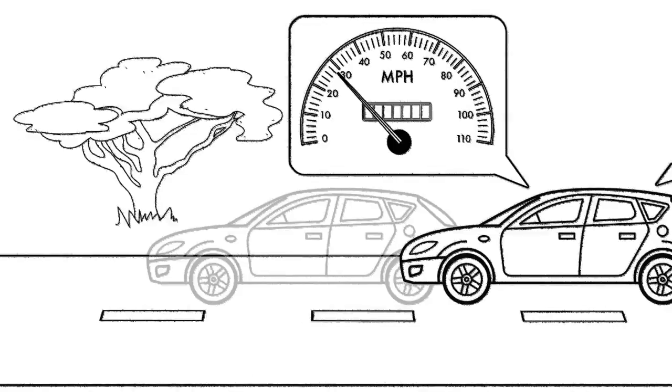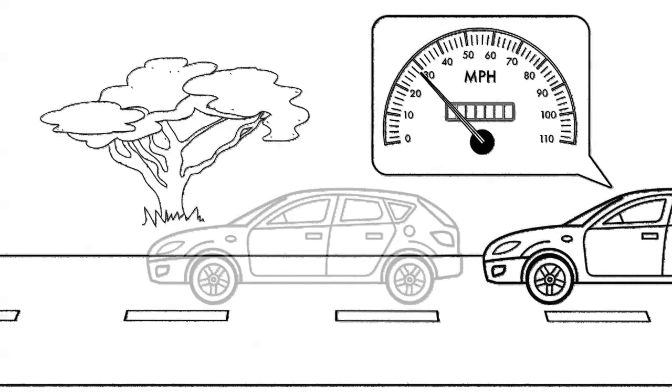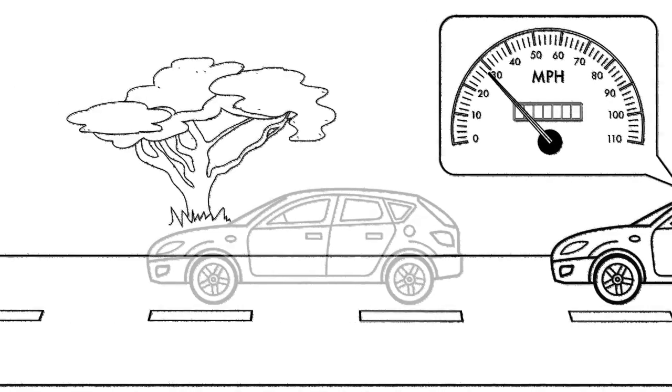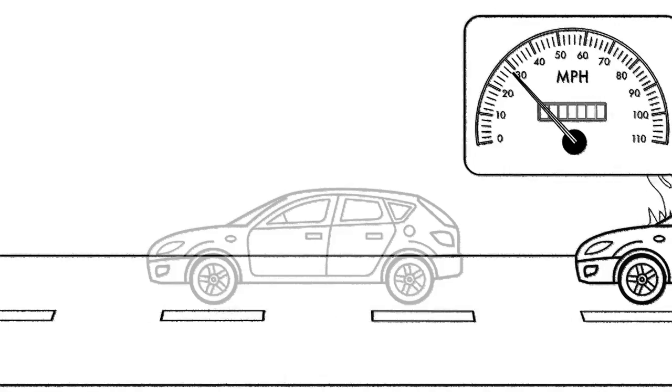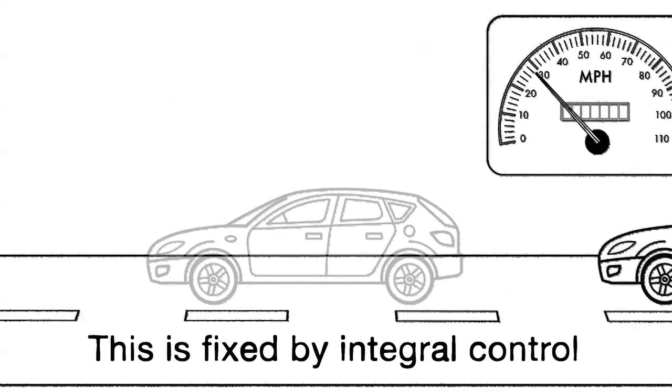What we need is something that comes more into play the longer the error exists however small it is. The constant error of even a fraction of an MPH will accumulate until it is big enough that we need to take corrective action. This is called integral control.